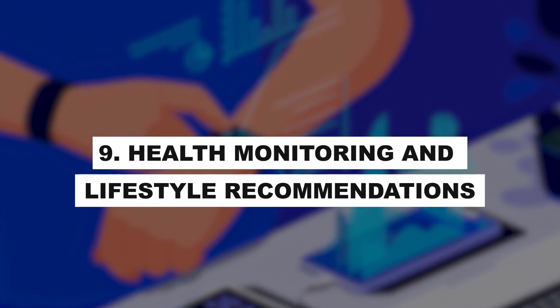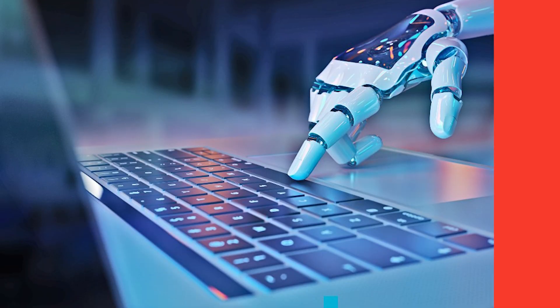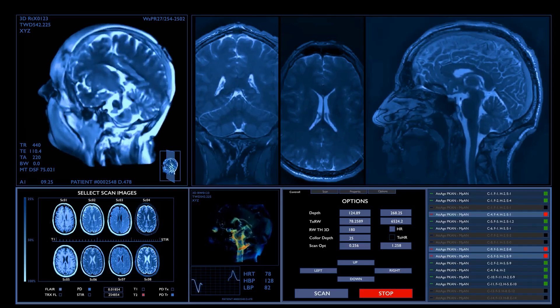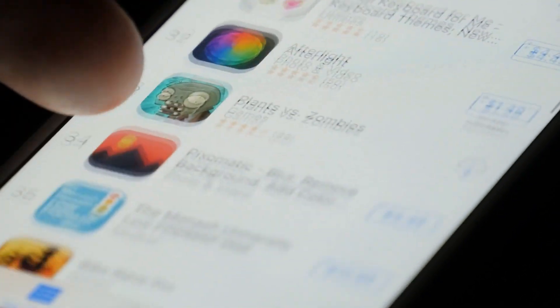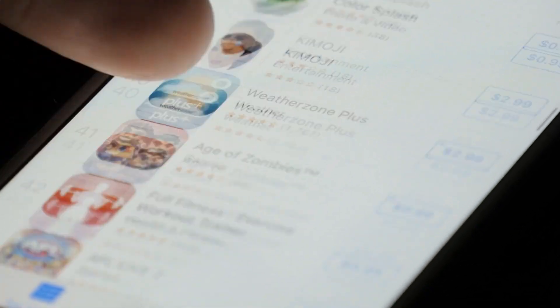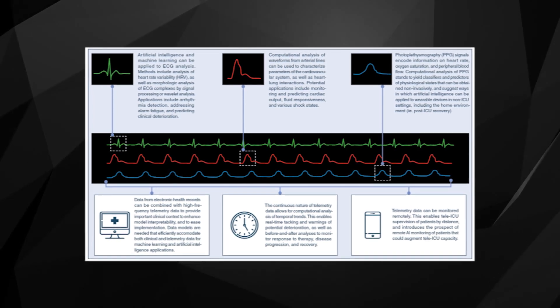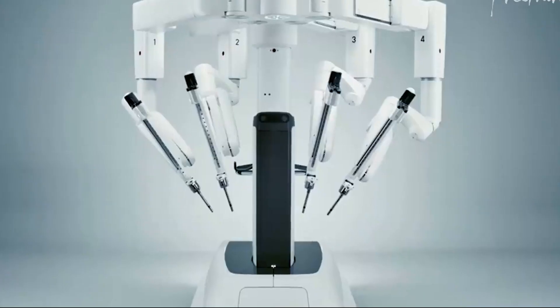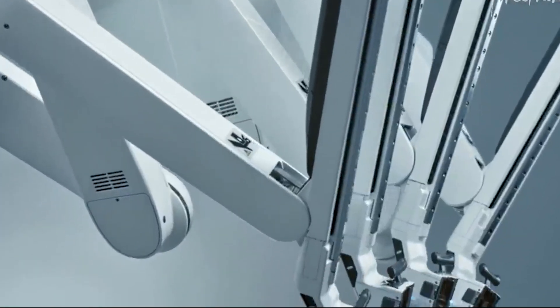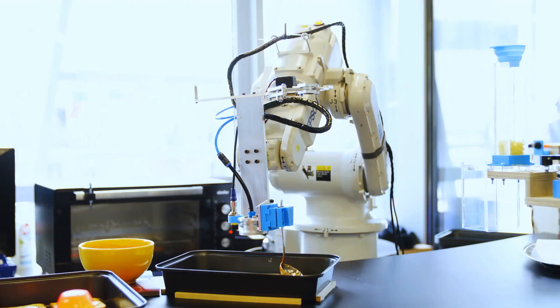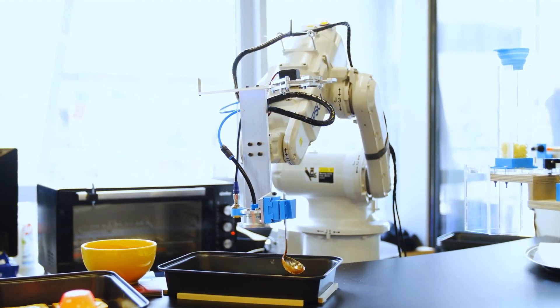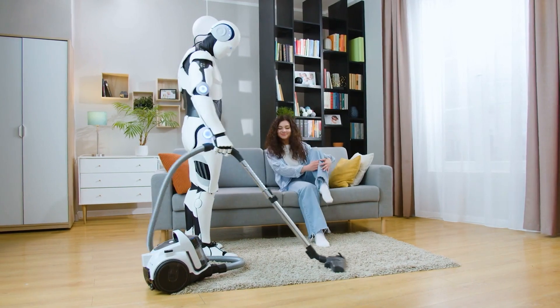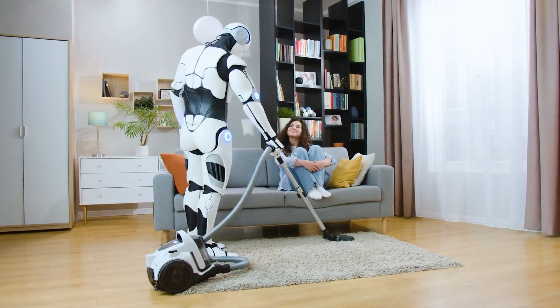Health monitoring and lifestyle recommendations: the integration of AI technology revolutionizes health monitoring and lifestyle choices. Utilizing wearable devices and mobile applications, AI tracks diverse health parameters like physical activity. This proactive engagement empowers individuals to assume greater control over their health journey. By leveraging AI-driven insights, individuals embark on a path of self-empowerment, prioritizing preventive health measures and optimizing their quality of life.